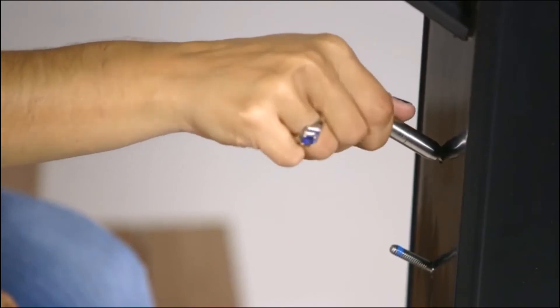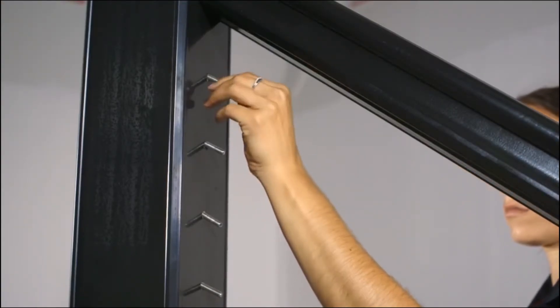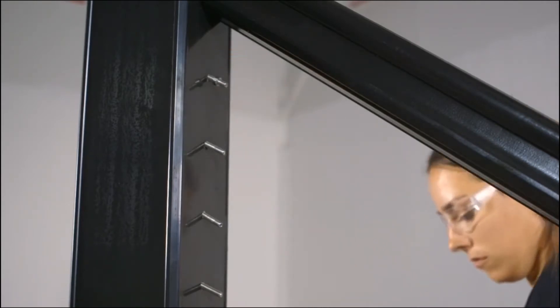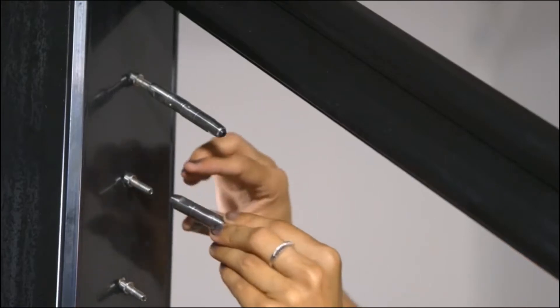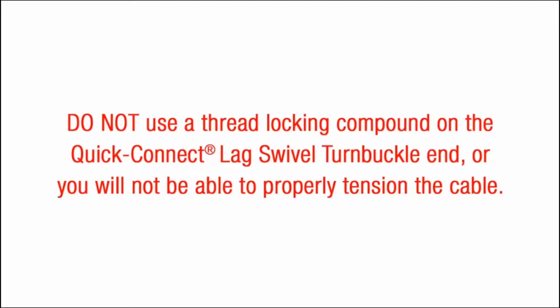At the top termination post, we are installing Quick Connect lag swivel turnbuckles. Do not use a thread locking compound on these threads. First spin the lock nuts onto the hanger bolts. Then attach the Quick Connect lag swivel turnbuckle and rotate the body four complete turns. Do not use a thread locking compound on the Quick Connect lag swivel turnbuckle end, or you will not be able to properly tension the cable.